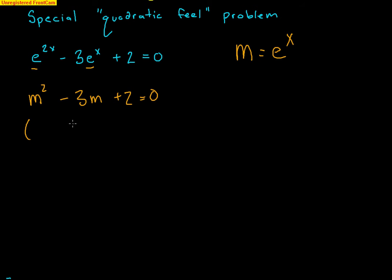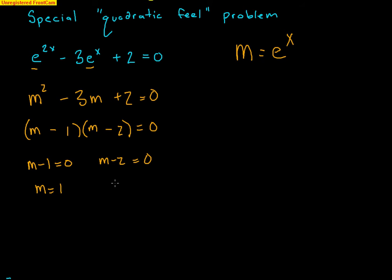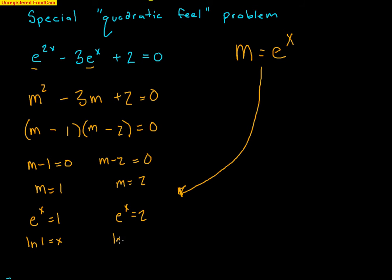Now I can factor: (m − 1)(m − 2) = 0, so m = 1 or m = 2. Putting m back, e^x = 1 or e^x = 2. Applying natural log: x = ln(1) or x = ln(2). Those are the two solutions. Just be careful with that quadratic feel — think chunking, factor normally, then put e^x back and solve exponentially.